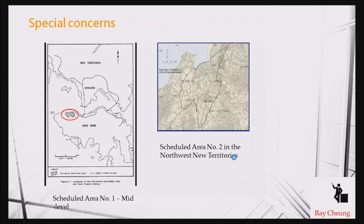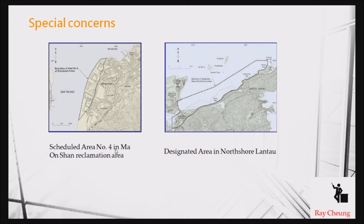For some locations you need to pay particular attention. For example, if the site is near a slope, you need to make sure the foundation design will not affect the existing slope. In some areas — for example in marble zones — you can see there may be voids between the foundation and the rock, which we call cavities.